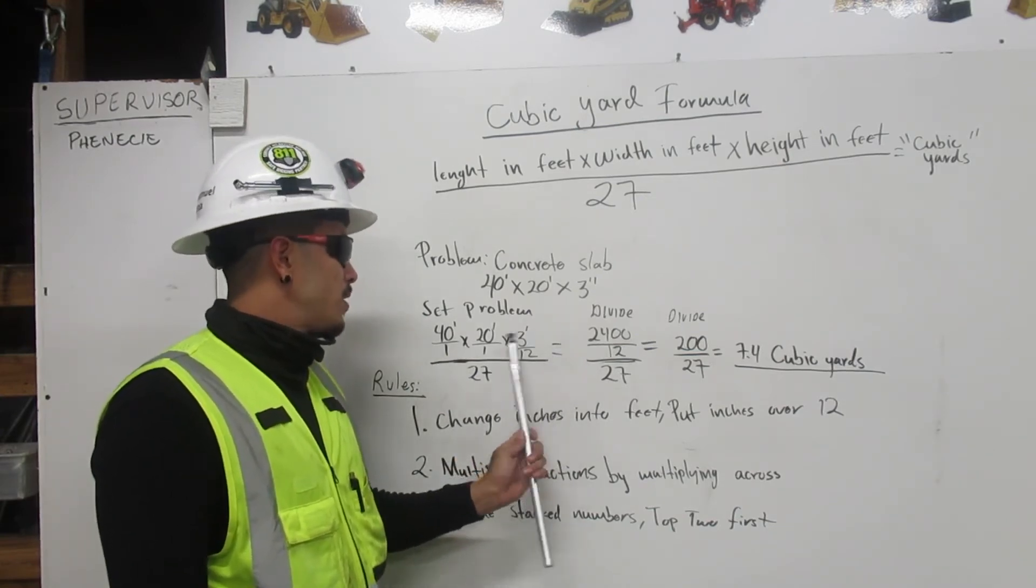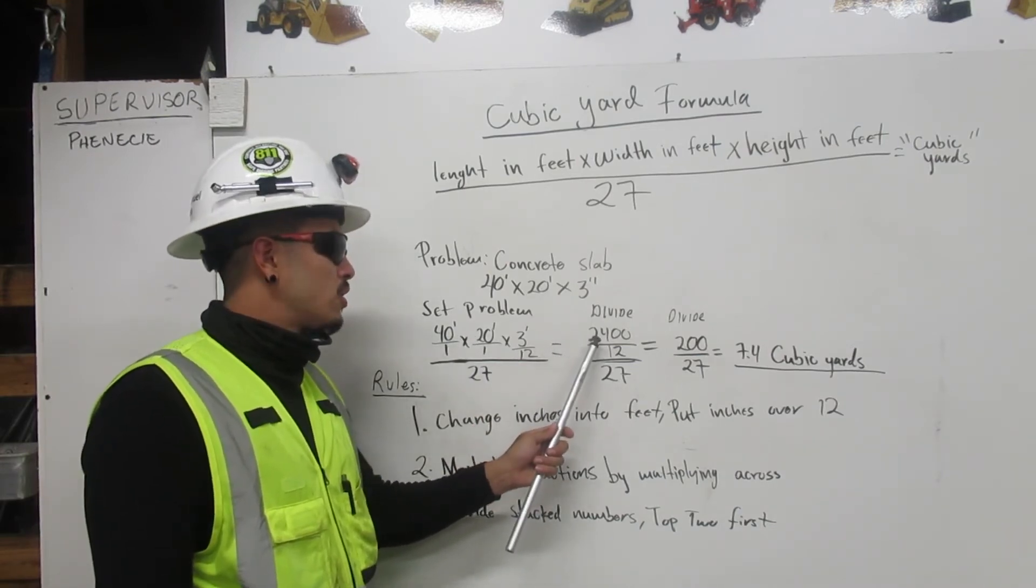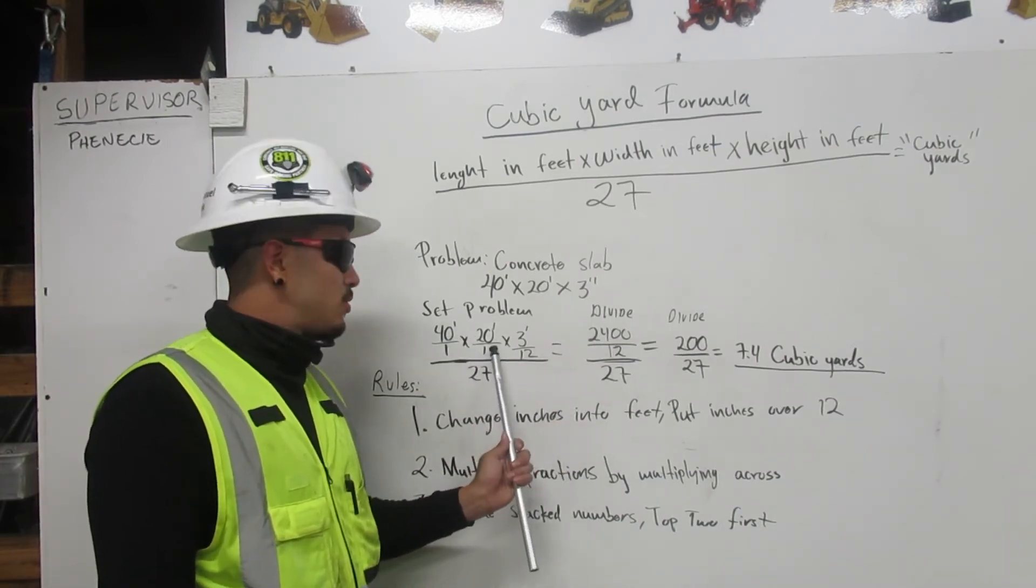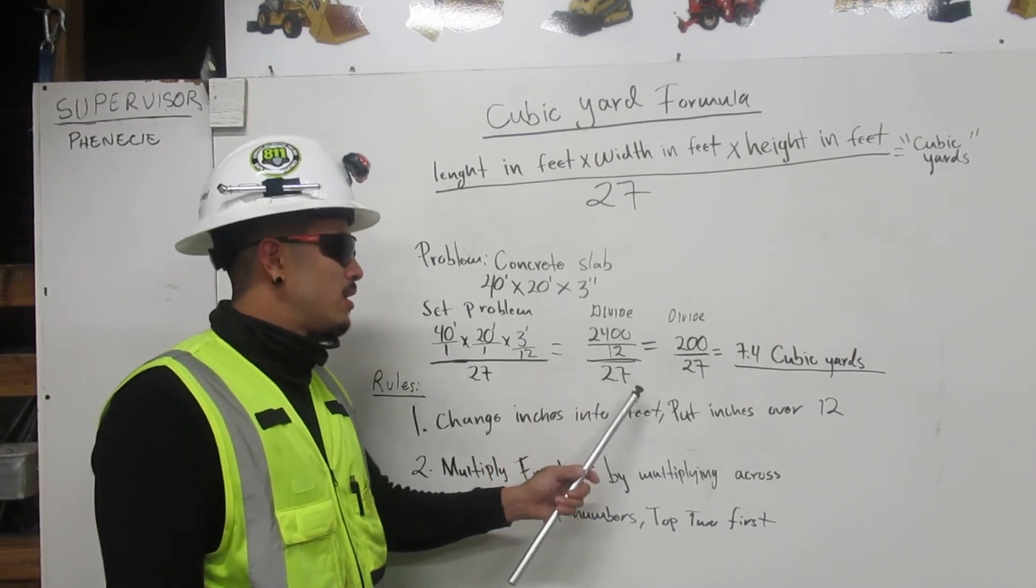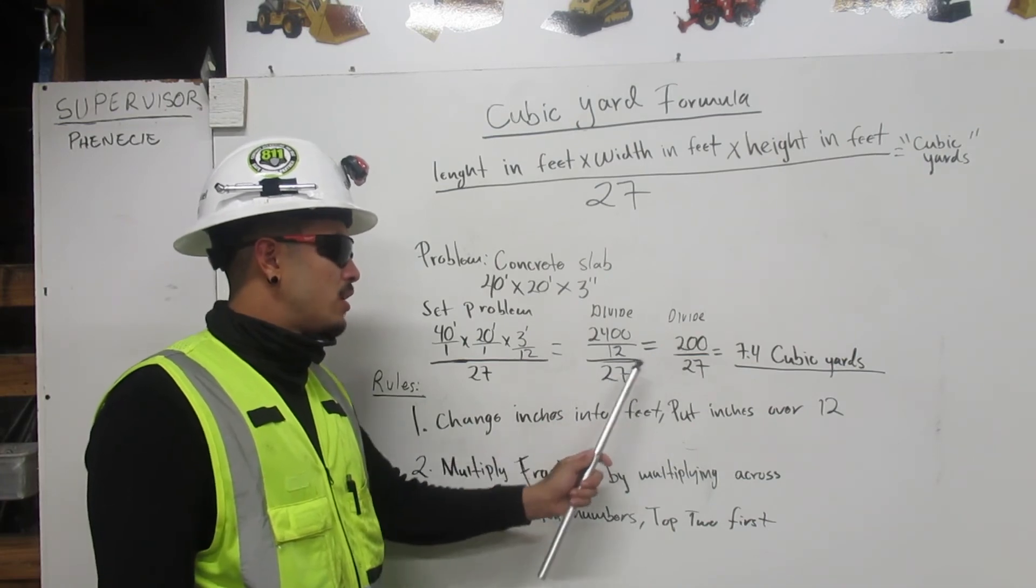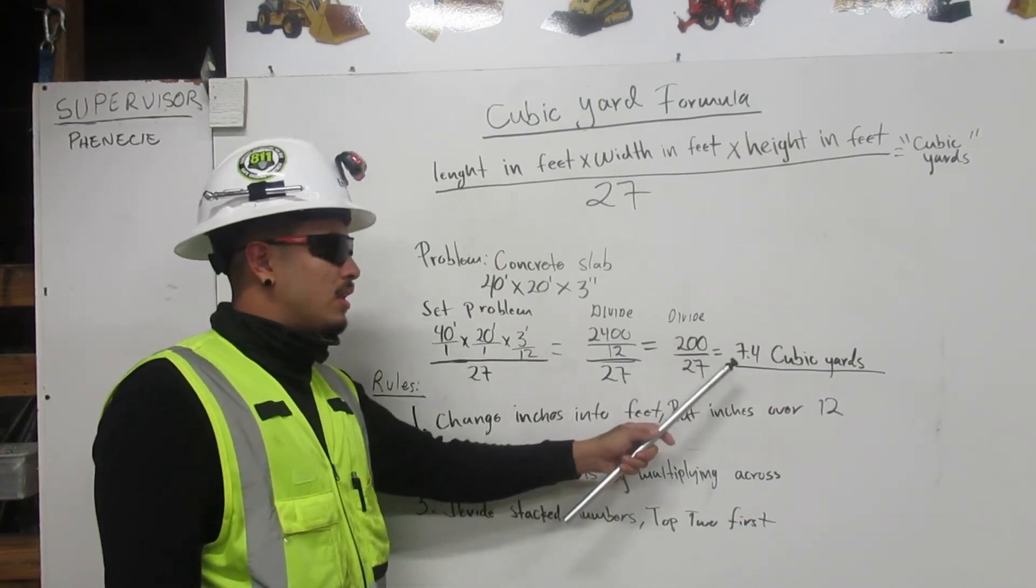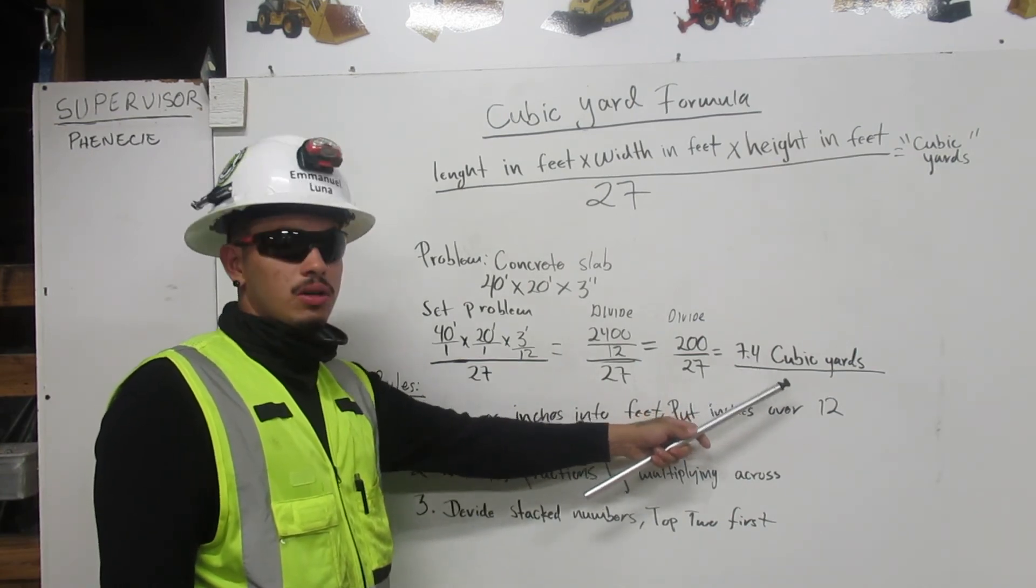Now here you multiply 40 times 20 times 3, which gives you 2400. Then 1 times 1 times 12 gives you 12 over 27. Now you divide 2400 by 12, which gives you 200, and you bring the 27 over. You divide that and it gives you 7.4 cubic yards.